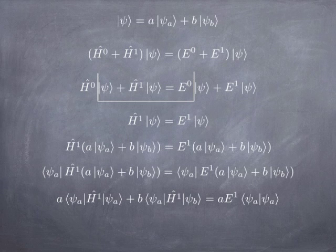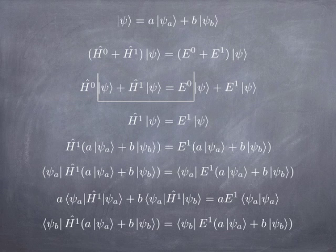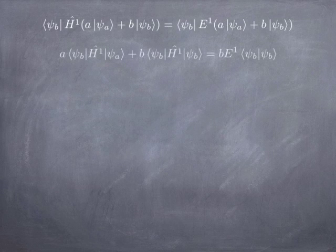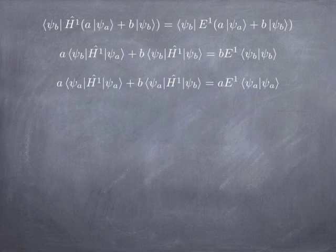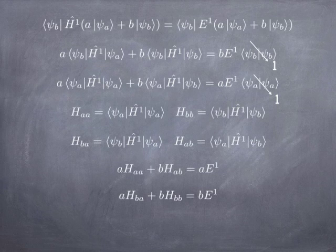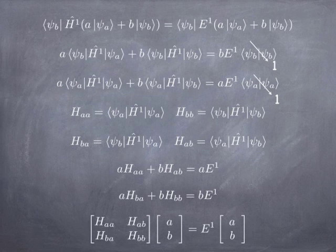Notice that ⟨ψ_A|H1|ψ_A⟩ is just an integral — it's a number. ⟨ψ_A|H1|ψ_B⟩ is a different integral. These are called matrix elements, but they're basically just numbers. ⟨ψ_A|ψ_A⟩ is of course 1. Doing the same thing with psi B, we get A times one number plus B times another number equals B times the correction to the energy. Putting those two equations together, we have a system of just two linear equations with two unknowns, which we can solve with linear algebra.